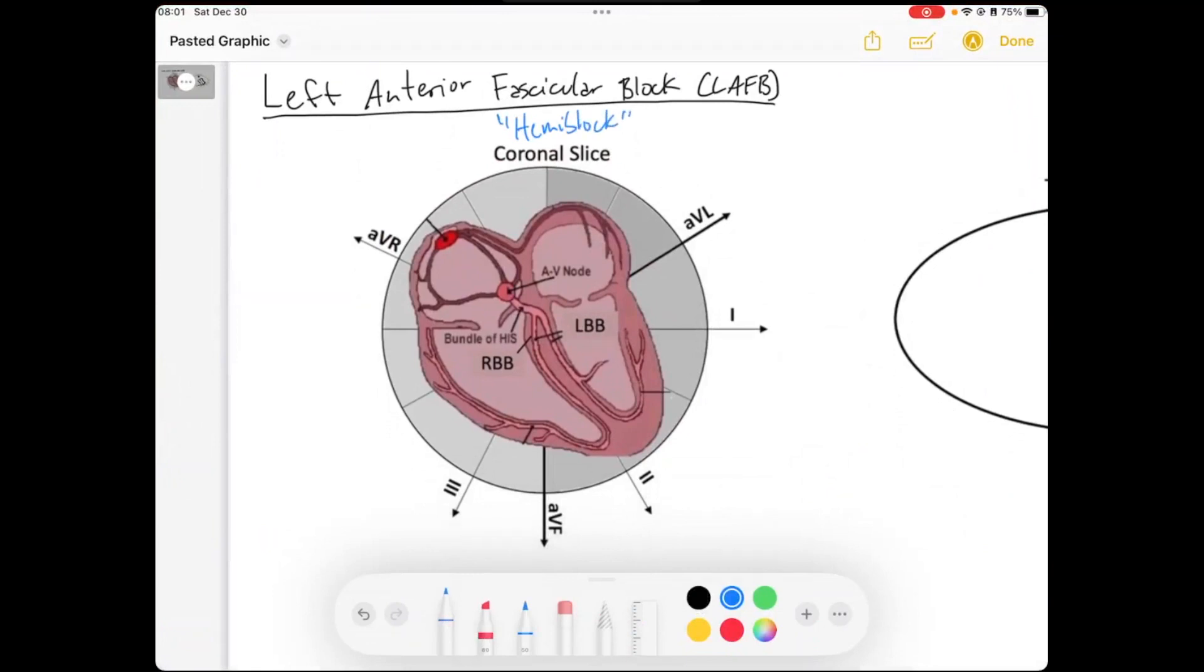And what a hemiblock is, or what a fascicular block is, is if we zoom into our left bundle branch, so say we have our AV node. The AV node has this bundle of His, and then we have our left bundle branch. So the left bundle branch will continue to branch off as it feeds these fibers throughout the left ventricle for it to be depolarized appropriately. And there are two main fascicles, which are just branches from the main left bundle branch.